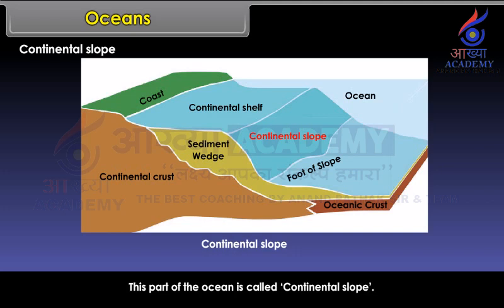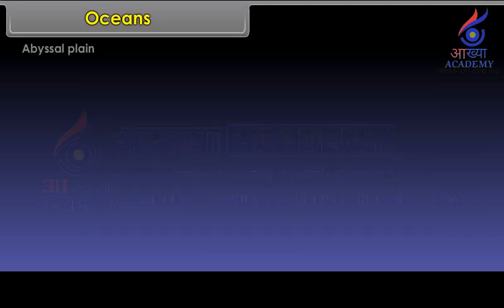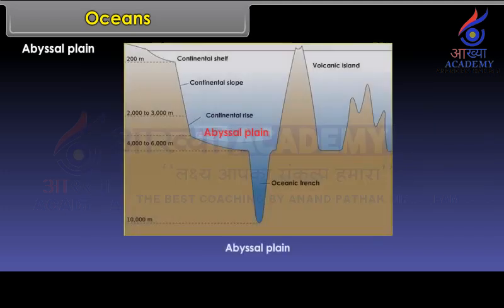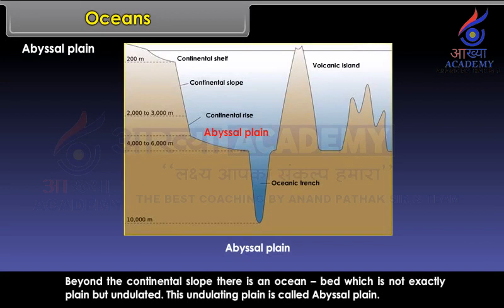Abyssal Plain. Beyond the continental slope there is an ocean bed which is not exactly plain but undulated. This undulating plain is called the Abyssal Plain.